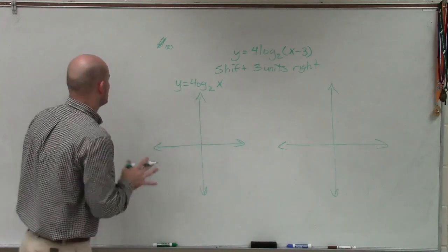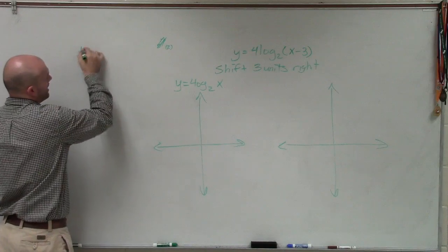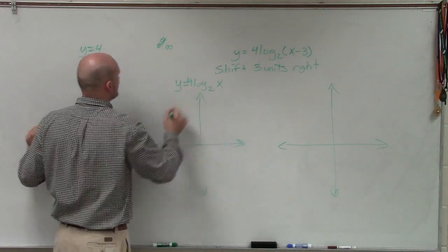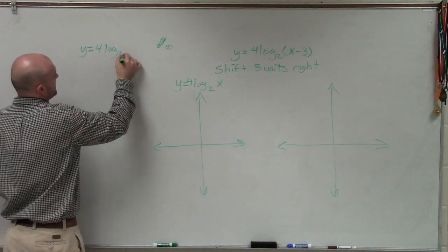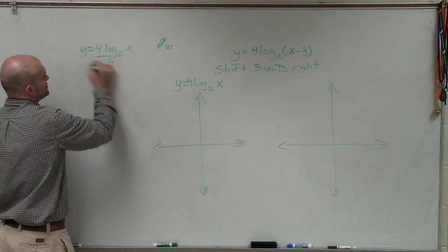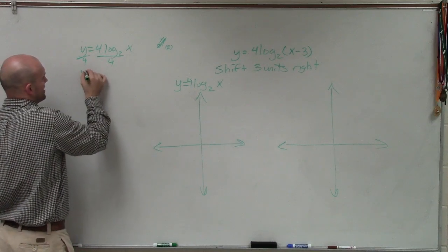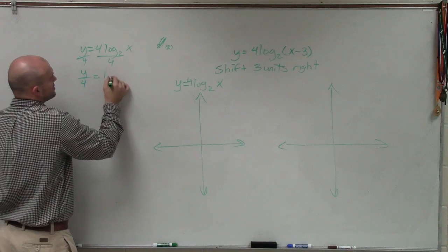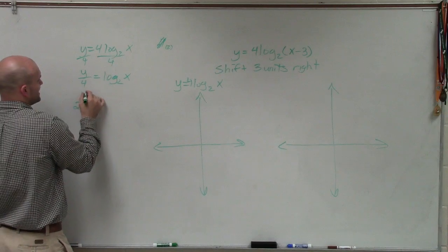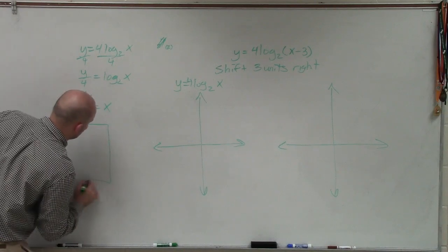Now, to graph this, again, we can set up a table of values. So what I'll do is I'll have y equals 4 log base 2 of x. Now, there's a couple properties of exponents we could use. Or you could also divide by 4 on both sides and then rewrite it in exponential form. So I have y over 4 equals log base 2 of x. Rewriting this in exponential form, we have 2 raised to the y fourth power equals x.